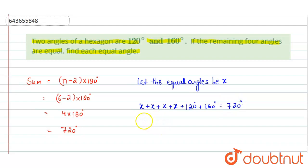Now solving this, we will get 4x plus this will give us 280 degrees equals to 720 degrees. Now for simplifying this, we will get 4x equals to 720 degrees minus 280 degrees,